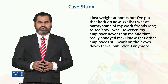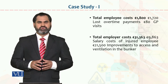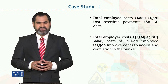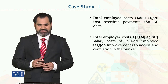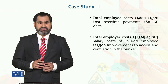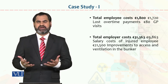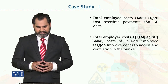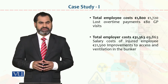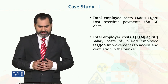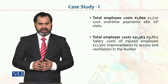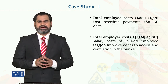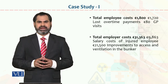Now dear students, I want to tell you about the costs involved. Total employee costs: £1,800. Lost overtime payment: £80. GP visits paid by the organization. Total employee cost: £31,363. This breaks down as £9,863 salary cost of the injured employee, and £21,500 for improvements to access and ventilation in the bunker. These are the costs associated with this incident.